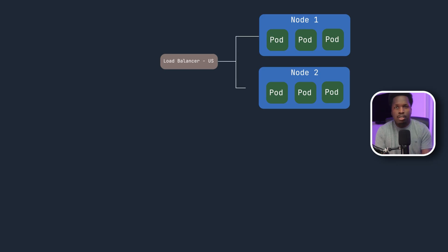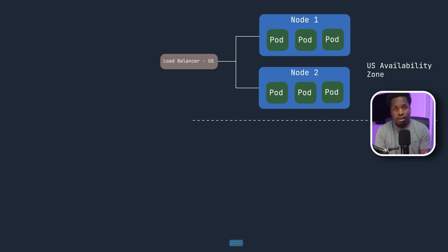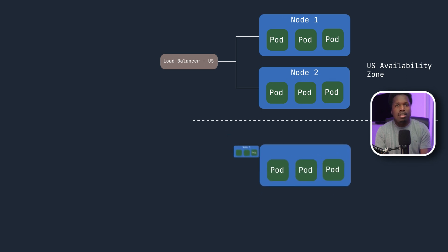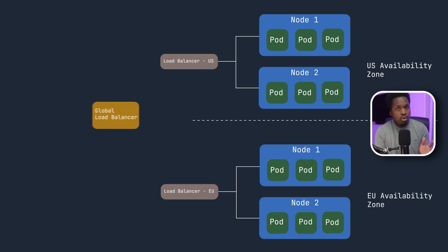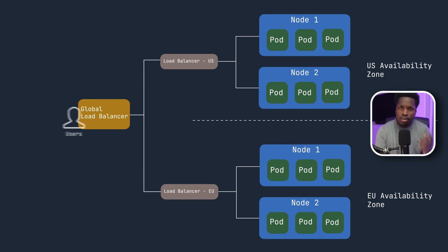The second reason is geographical redundancy, which helps with fault tolerance and disaster recovery. This is achieved by running multiple clusters in different regions with copies of the same applications, making them highly available even in the event of a disaster or an outage. So if you're running critical applications that require 24/7 availability and cannot afford any downtime, this would be a very ideal design choice.